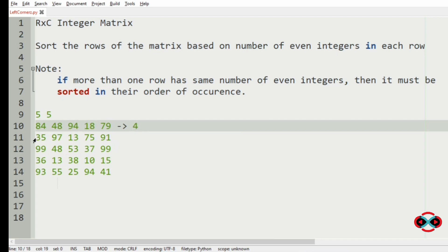So in the second row, there is no even integers, so it is 0. In third row, we have only 1 even integer. So 1. In fourth row, we have 2 even integers, so it is 2. In fifth row, we have only 1 even integer.